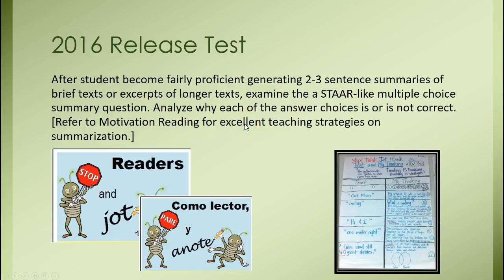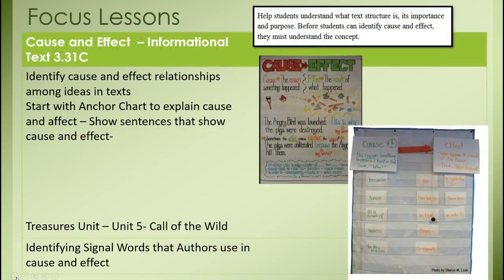After students become fairly proficient at generating two to three sentence summaries, I would say to go back and examine a Starlight multiple choice summary question from the 2014, 2015, and 2016 release tests — I only use 2013 and analyze why those answer choices are not correct. Motivation Reading also has some excellent summarization strategies. Stopping and jotting, looking, and noticing details is extremely important. You're also to be identifying cause and effect relationships among ideas in texts.